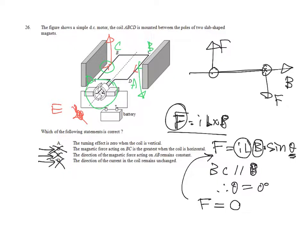Let's check option A. The turning effect is zero when the coil is vertical. In order to make a perfect deduction, let's see. Even in the vertical direction, there is still current passing through the coil. The force exerting on AB is pointing upward, while the force exerting on CD is pointing downward.